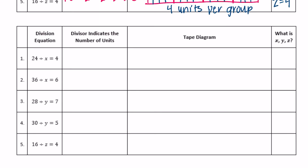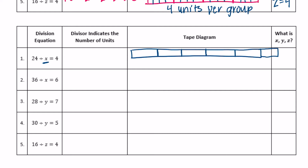The next section is a little bit different because it says the divisor indicates the number of units — so this is indicating how many units we actually have. So 24 divided by X equals 4. I'm going to draw a tape diagram and split it into 24 units, then separate them into groups of four. So we end up with 24 minus four, minus four, minus four, minus four, minus four, minus four, minus four, equals zero.